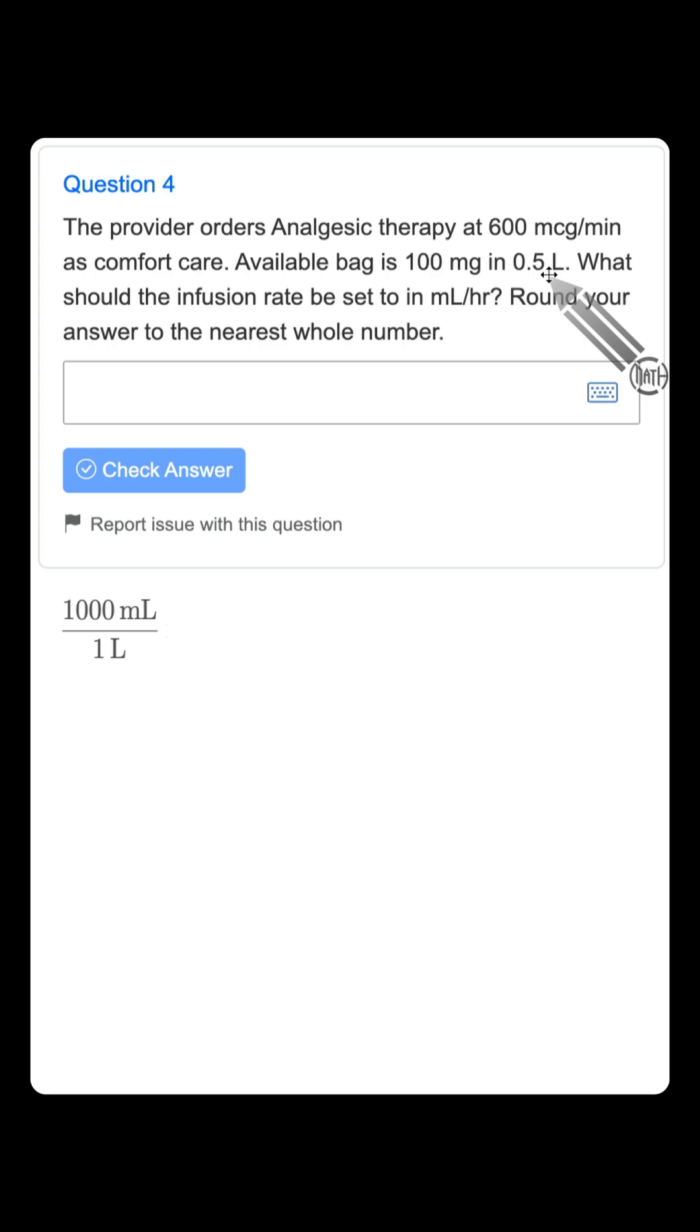But again, I'm going to act like we don't know that. I'm going to let the dimensional analysis take care of all this for us. So since we're missing milliliters in our problem, but we do have liters, let's write down that conversion. 1000 milliliters is equal to one liter.